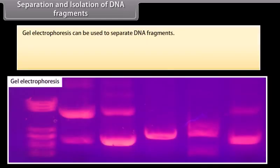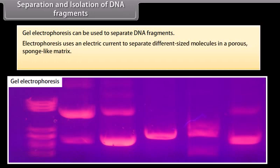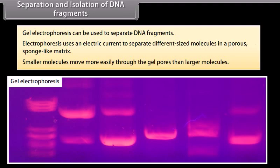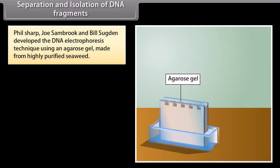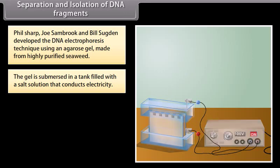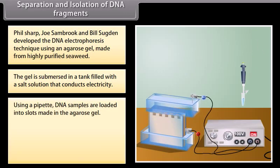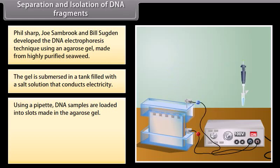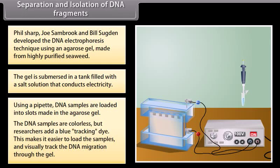Separation and isolation of DNA fragments. Gel electrophoresis can be used to separate DNA fragments. Electrophoresis uses an electric current to separate different-sized molecules in a porous, sponge-like matrix. Smaller molecules move more easily through the gel pores than larger molecules. Phil Sharp, Joe Sambrook, and Bill Sajjan developed the DNA electrophoresis technique using an agarose gel made from highly purified seaweed. The gel is submerged in a tank filled with a salt solution that conducts electricity. Using a pipette, DNA samples are loaded into slots made in the agarose gel. The DNA samples are colorless, but researchers add a blue tracking dye, making it easier to visually track the DNA migration through the gel.